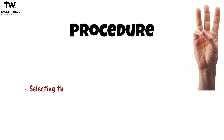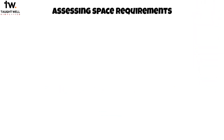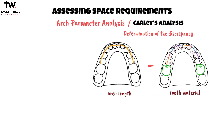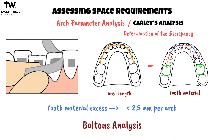The procedure for undertaking proximal stripping involves three steps: assessing space requirements, selecting the teeth and amount of enamel to be stripped, and enamel stripping. In the first step, assessing space requirements, the arch perimeter analysis or caries analysis is employed. An ideal candidate for proximal stripping is a case with tooth material excess of less than 2.5 mm per arch. Bolton's analysis can also help identify the areas of excess tooth material.